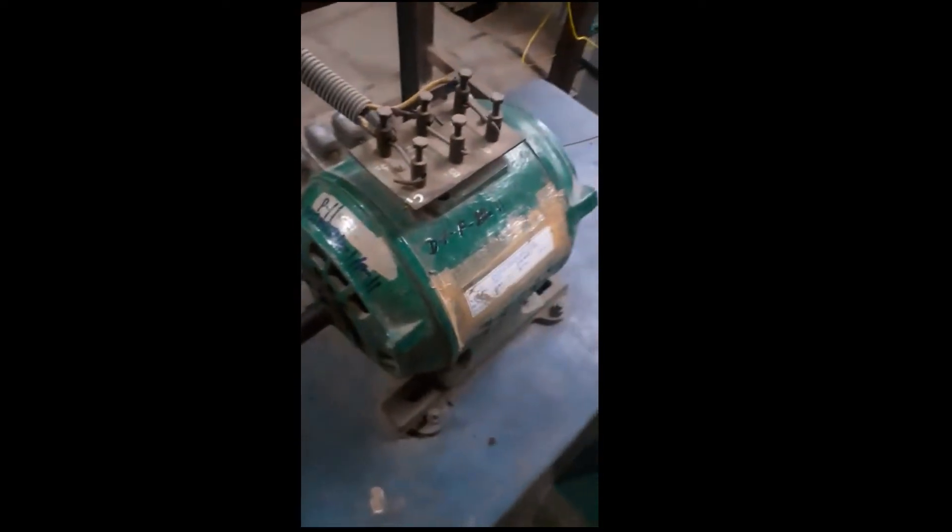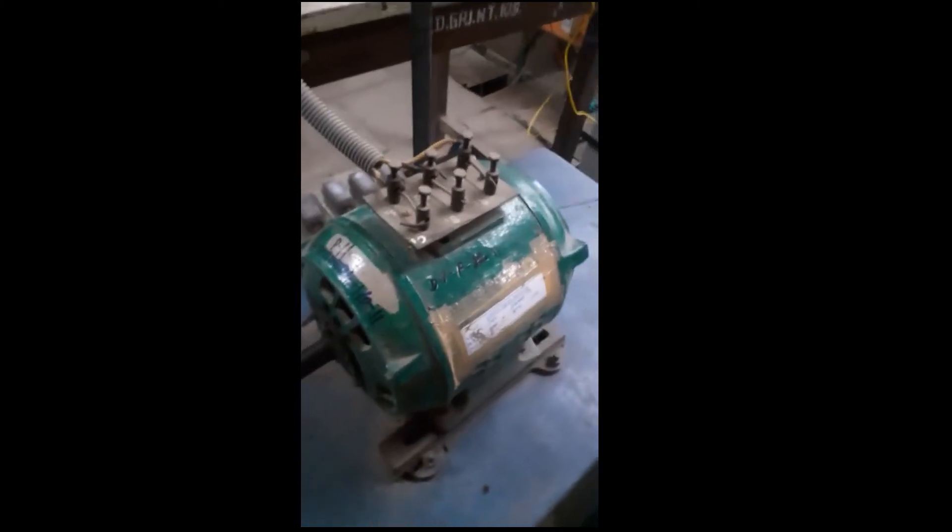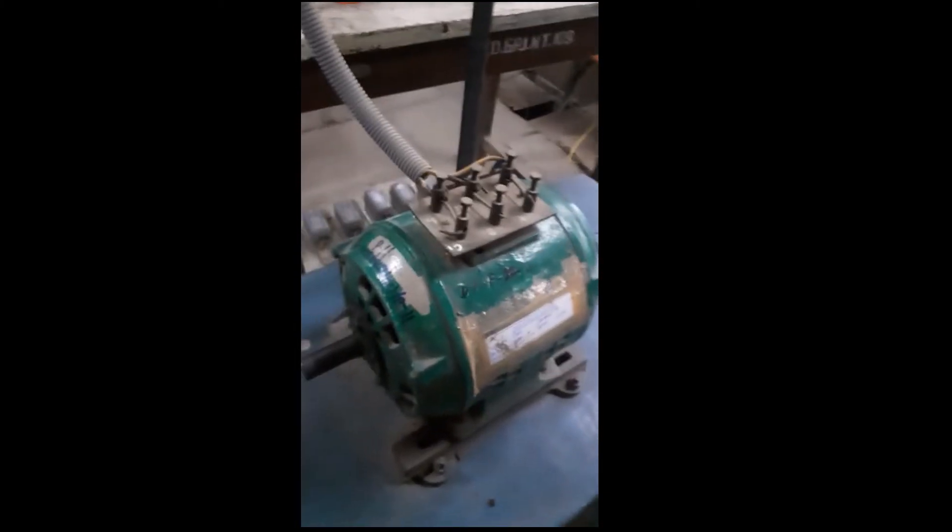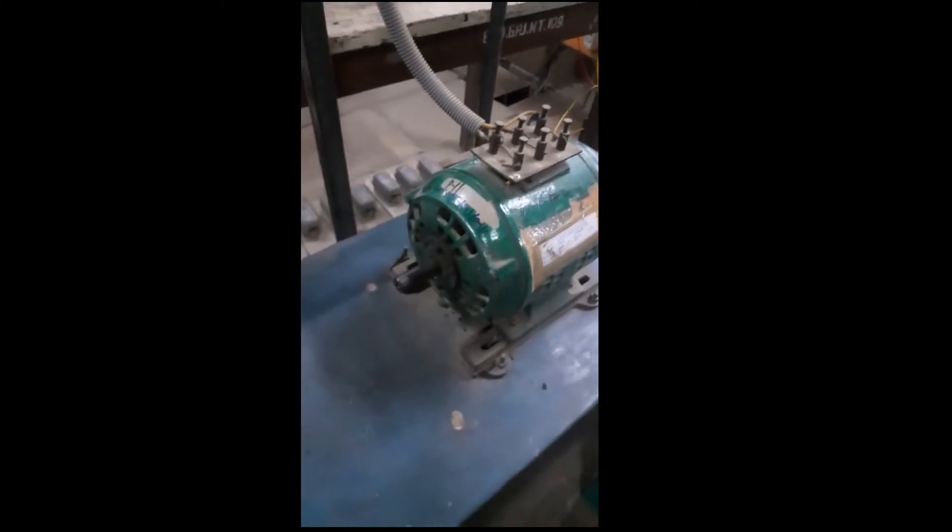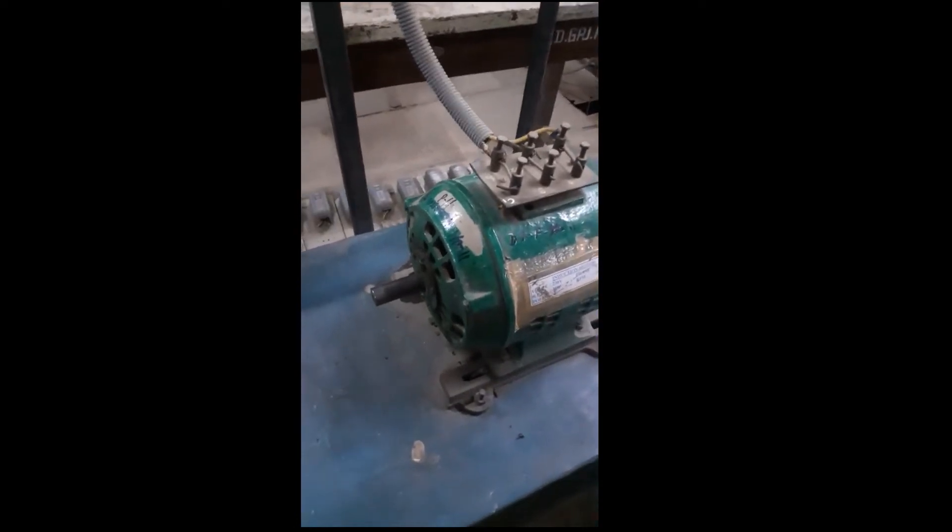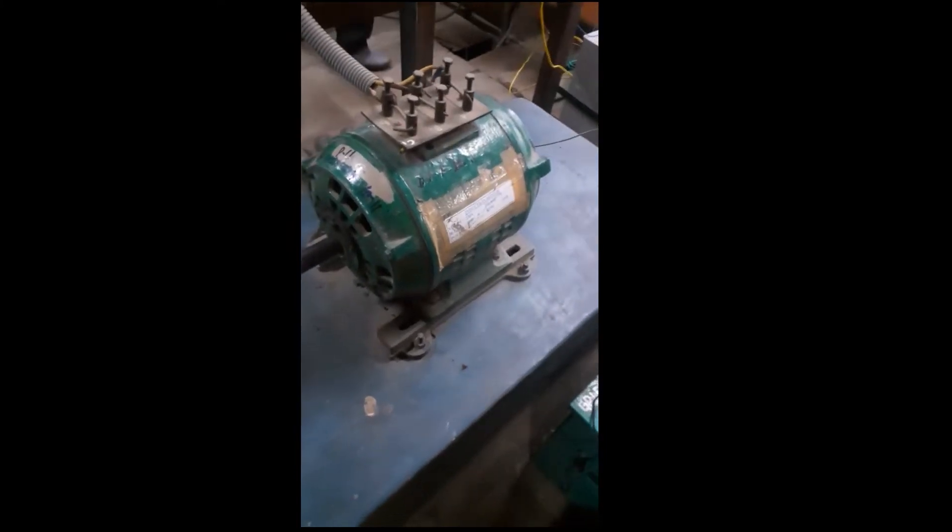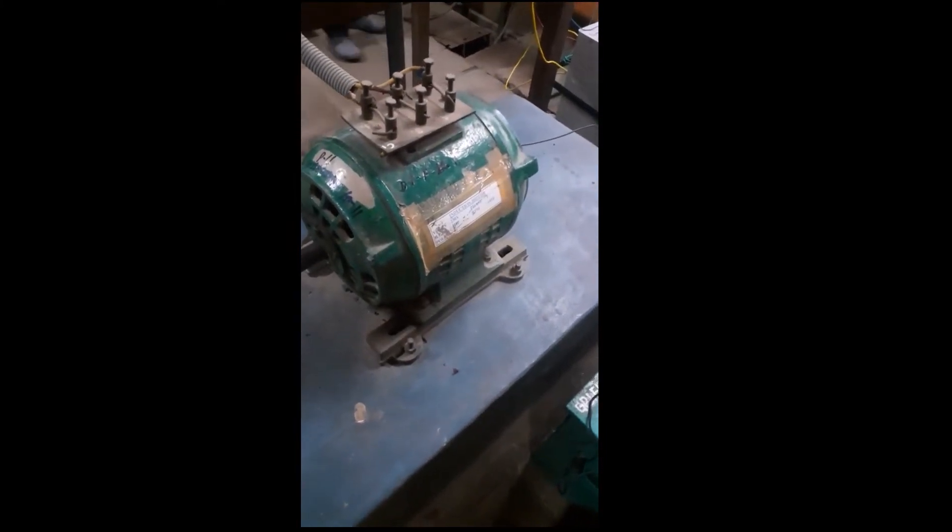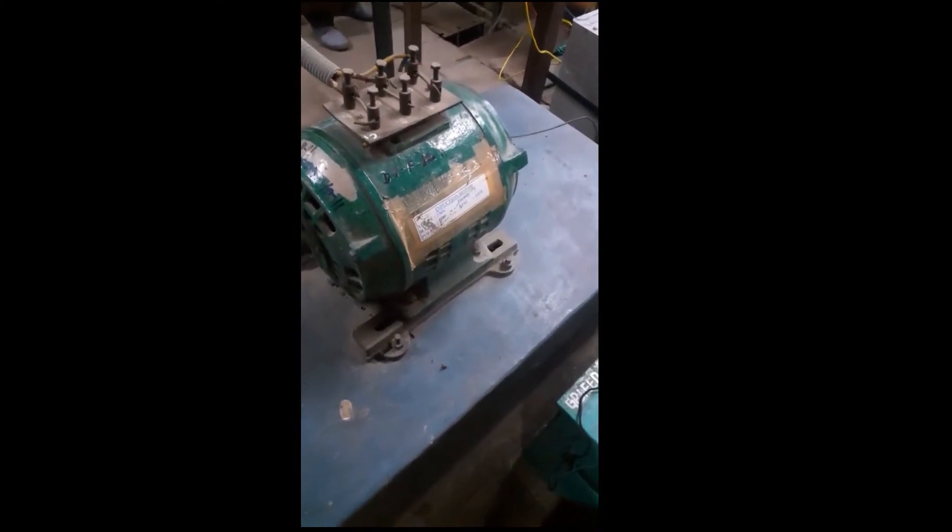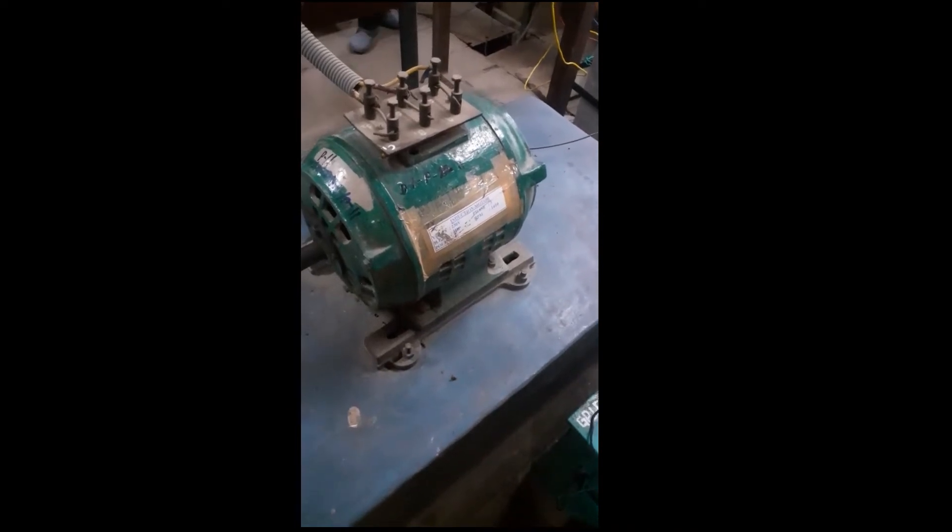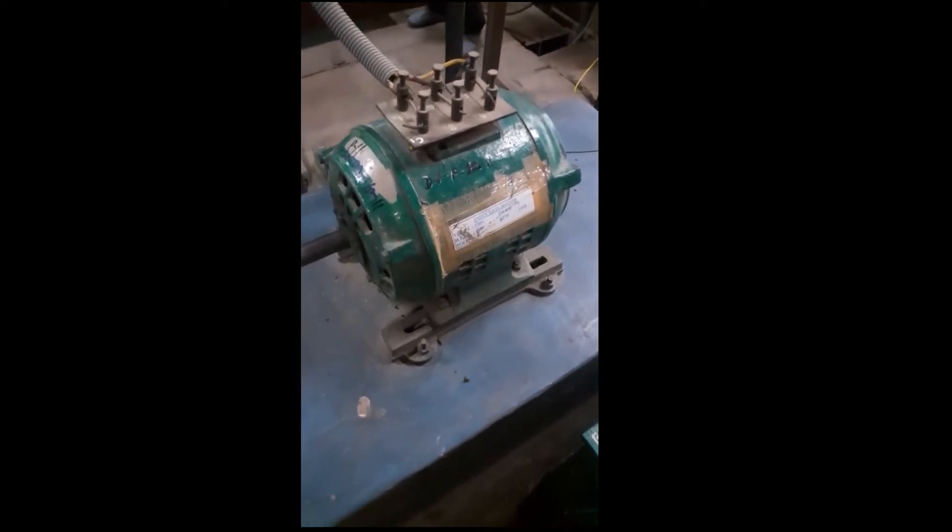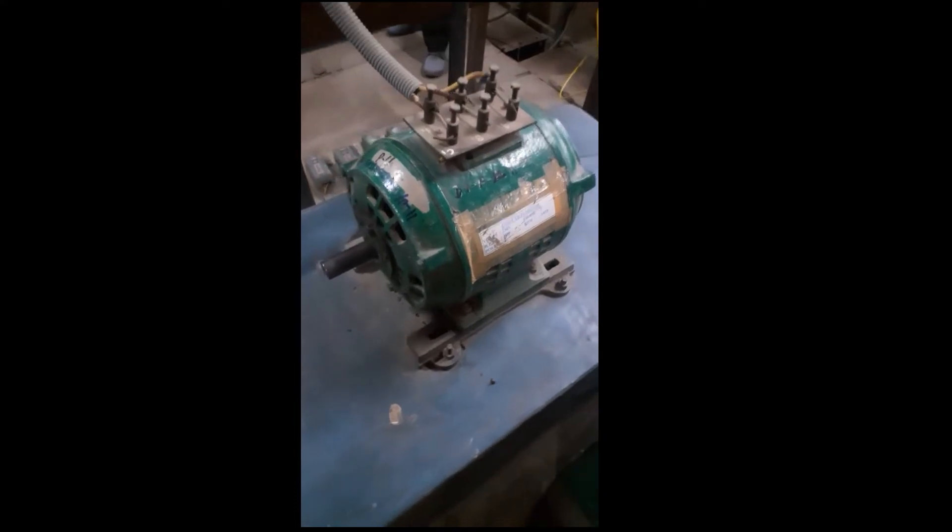To conduct this particular reduced voltage running up test, we have to apply reduced voltage. This motor is rated for 230 volts, but 1 by root 3 times that rated value—that is 230 divided by root 3—comes to 132 volts. So we have to apply 132 volts across the input terminals of this particular induction motor.